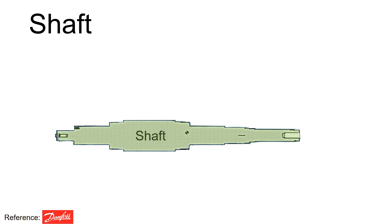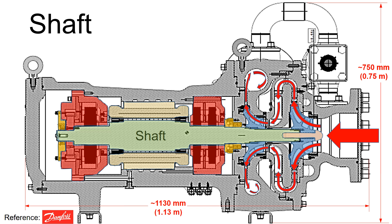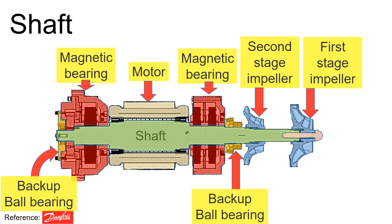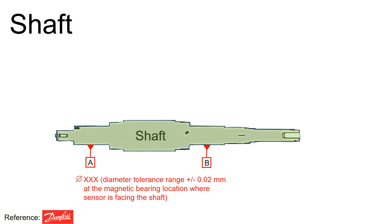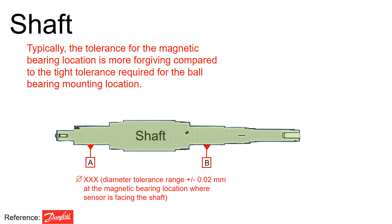Let's delve into how to define the tolerance at the shaft. To define tolerance, it is important to understand how the shaft interacts with surrounding components. First, identify components around the shaft including those at the magnetic bearing location, motor, impeller, and so on. Specifically, areas where the sensors face the shaft are defined with datum A and B with a tolerance range of ±0.02 mm. Typically, the tolerance for the magnetic bearing location is more forgiving compared to the tight tolerance required for the ball bearing mounting location.